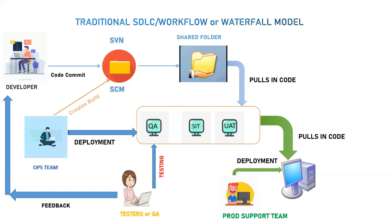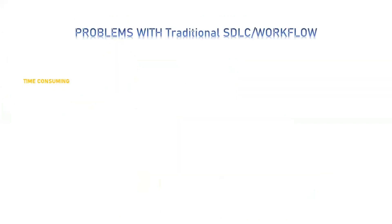Now that we are familiar with this whole lifecycle, let's understand what the problems or drawbacks of this old model were. The first problem was that it was time-consuming — the whole process from writing the code, creating the build, doing testing, and finally deploying into production took a long time. The second problem was the cost of change, since the traditional workflow involved a lot of effort, time, and cost. The third drawback was the poor quality of the product delivered to the end customer.